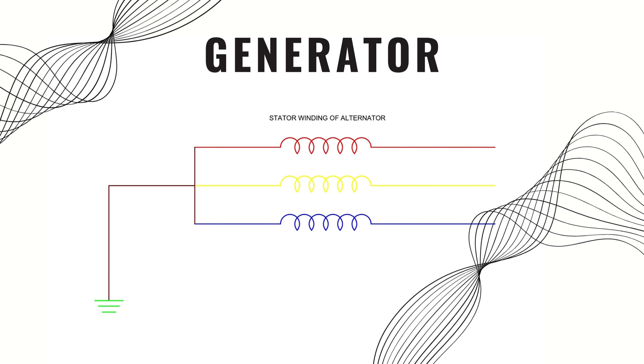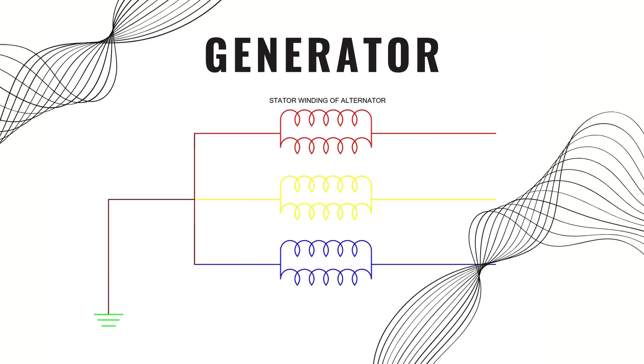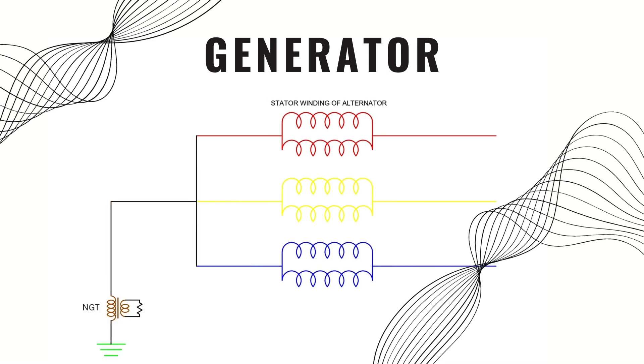Actually, the stator of the generator is connected in a double star connection method. This means that there are two windings connected parallel in each phase and each phase is connected in star configuration. On the neutral side, there is a neutral grounding transformer through which the neutral is grounded.